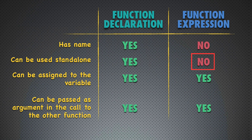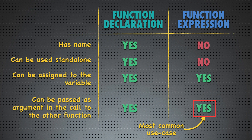If you try to create a function using a function expression stand-alone, you will immediately get an error. Function declaration can be assigned to a variable, and function expression can be as well. Both can also be passed as an argument in a call to another function. That is the most common usage of function expressions, because when you pass a function to another function as an argument, you don't necessarily need a name — that's why anonymous function expressions are mostly used in this case.